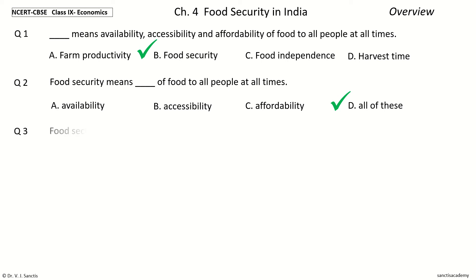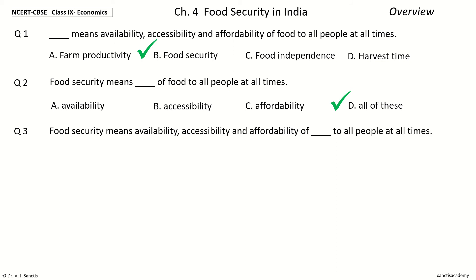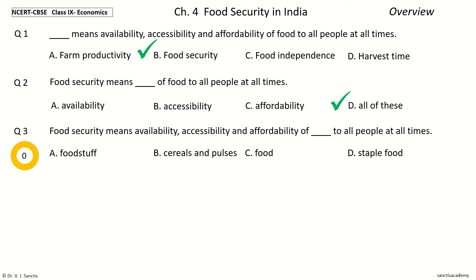Question 3: Food Security means Availability, Accessibility and Affordability of Dash to all people at all times. The options are Food Stuff, Cereals and Pulses, Food, Staple Food. Your time to choose. And the answer is Food.